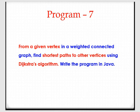I am going to explain the 7th program: from a given vertex in a weighted connected graph, find the shortest path to other vertices using Dijkstra's algorithm. Write the program in Java. That is the question. Here I am going to explain how the Dijkstra algorithm works.